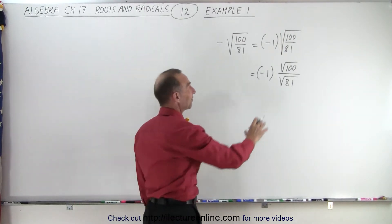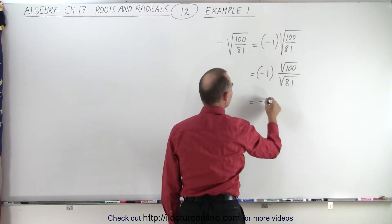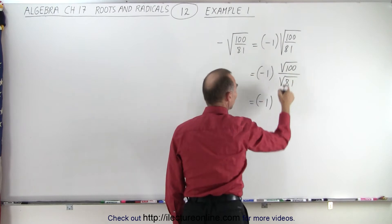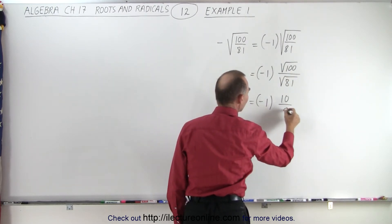So now that we have separated the numerator from the denominator, this can be written as negative 1 times the square root of 100, which is 10, divided by the square root of 81, which is 9.